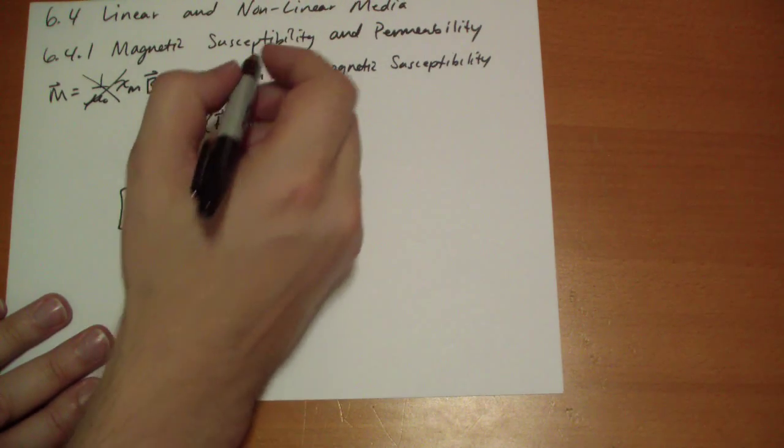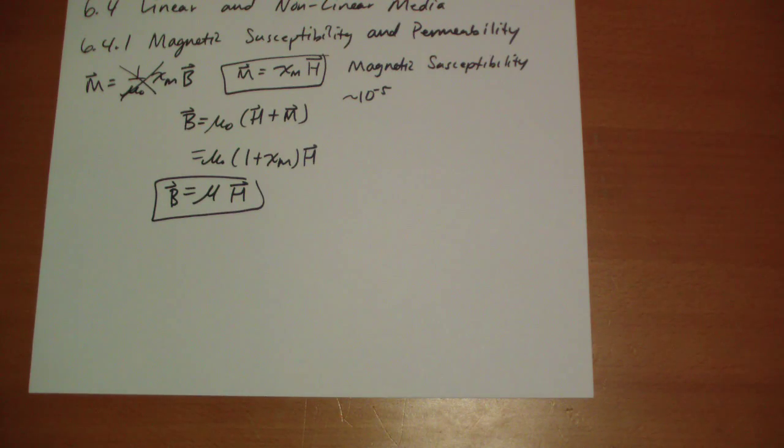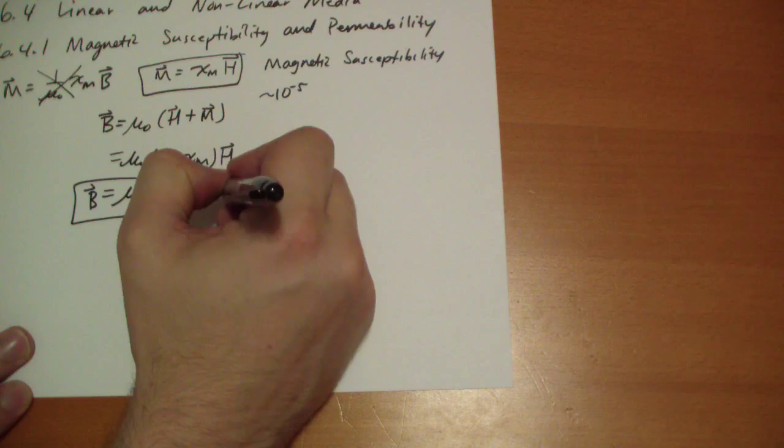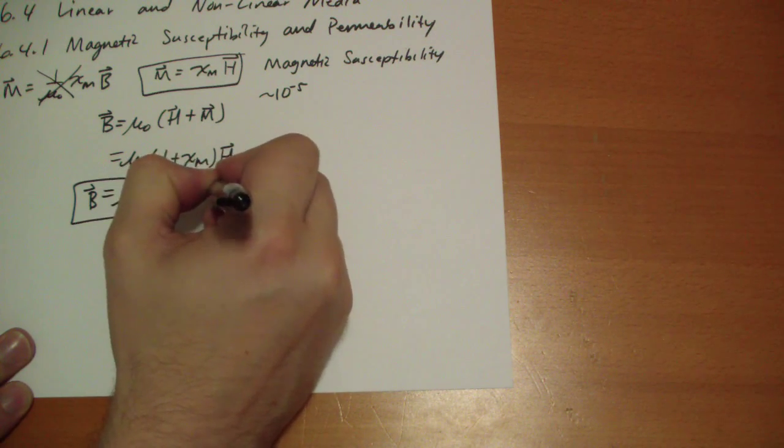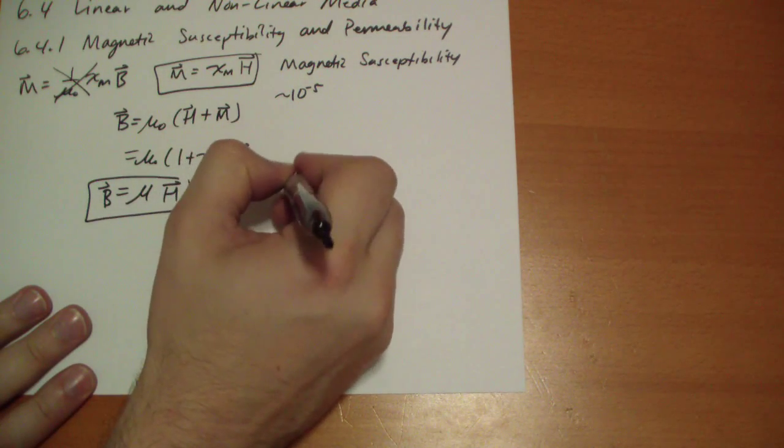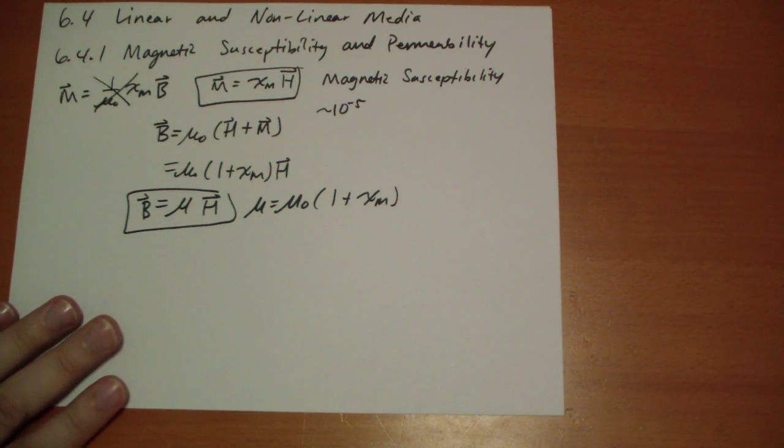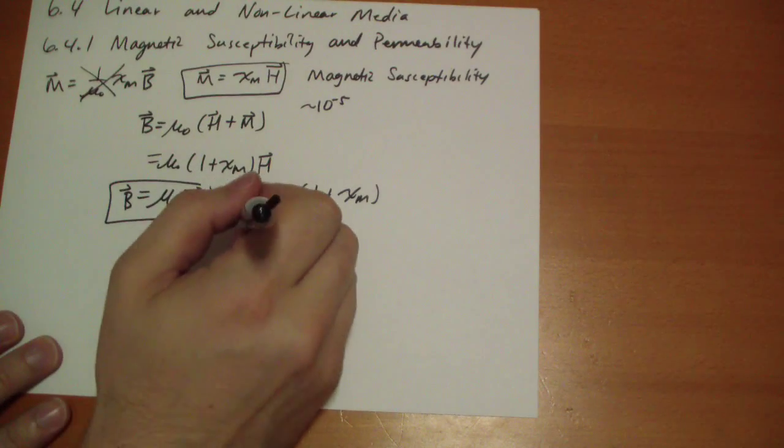So here's the other formula. Here's the first formula. So, oh, and mu is equal to, sorry, out of habit I wrote that 0. 1 plus the magnetic susceptibility. And this is called the permeability.